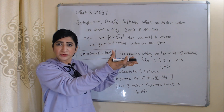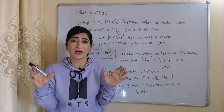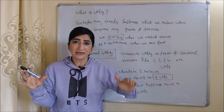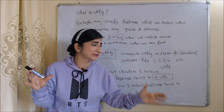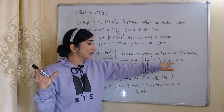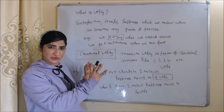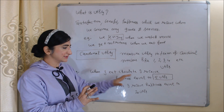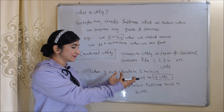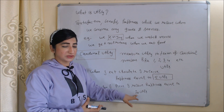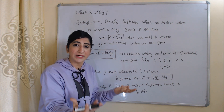Cardinal utility measures utility in terms of cardinal numbers like 1, 2, 3, 4, etc., and these numbers are called utils. For example, when I eat chocolate I receive happiness equal to 5 utils. Similarly, when I eat pizza I receive happiness equal to 20 utils. So here we are measuring our utility in terms of cardinal numbers, and these numbers are called utils.